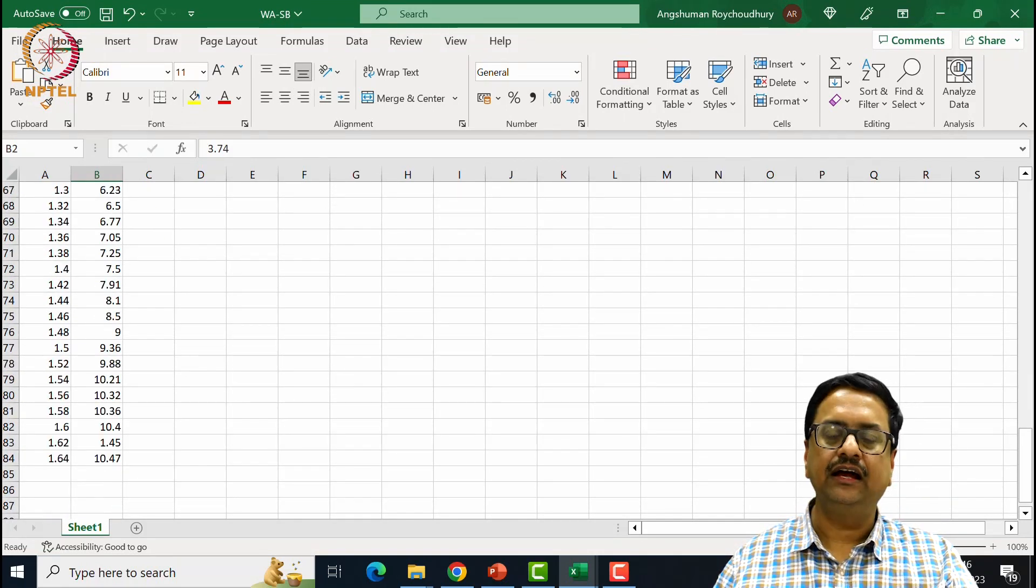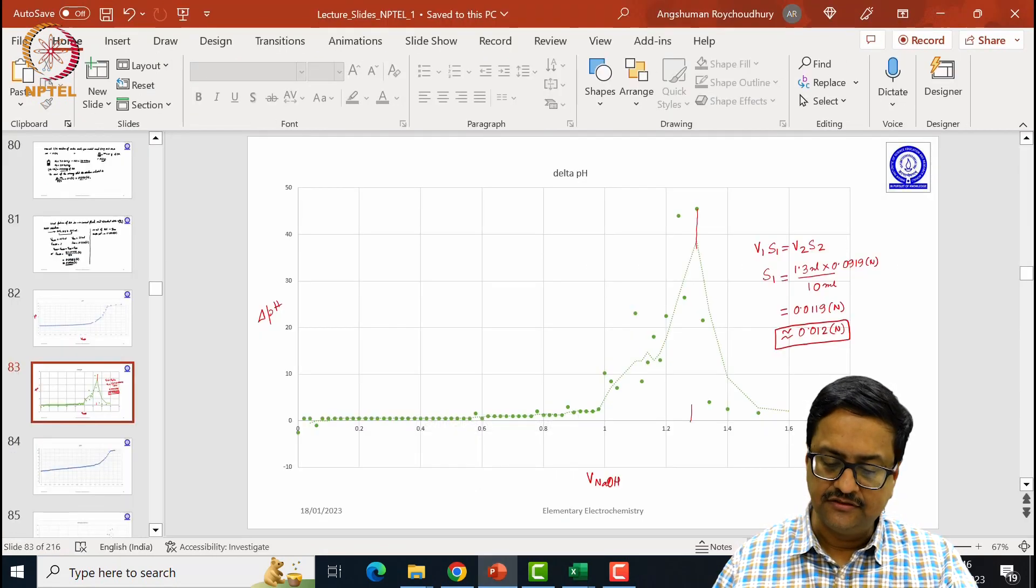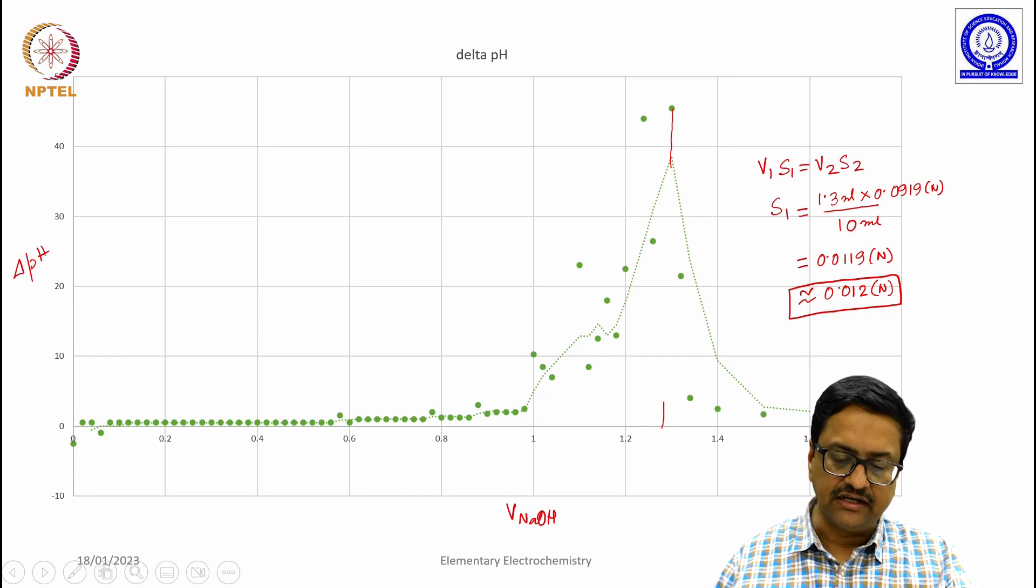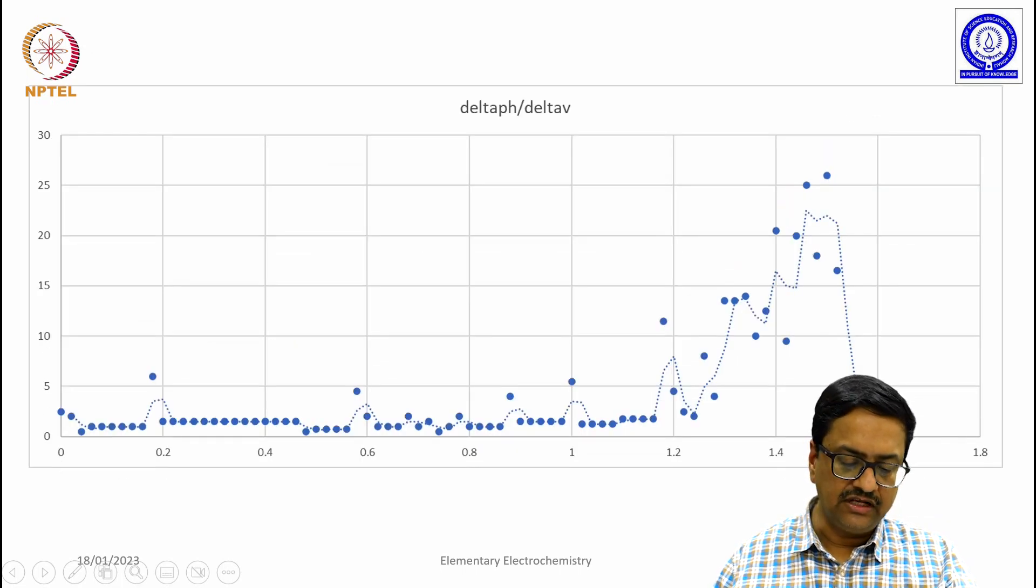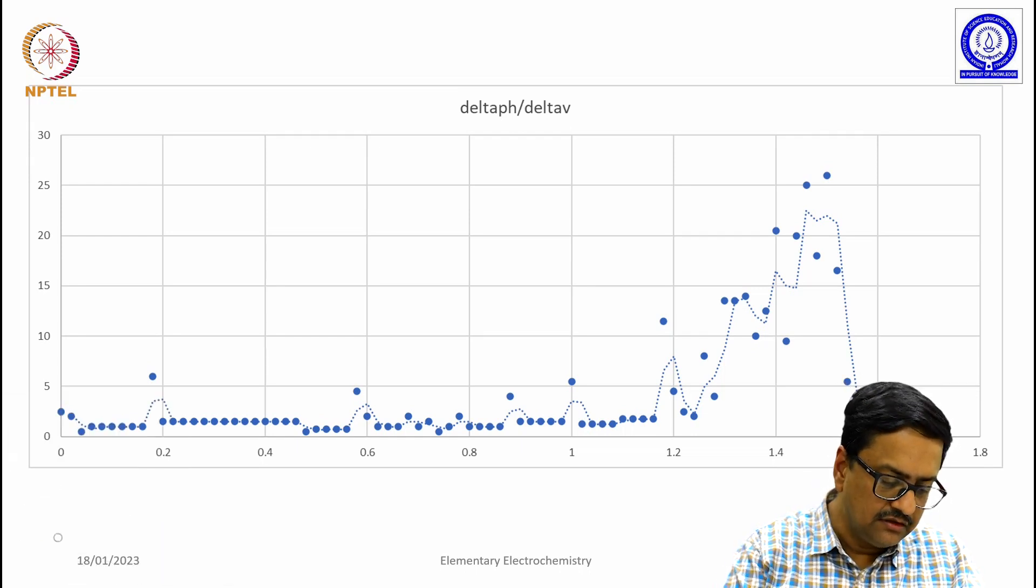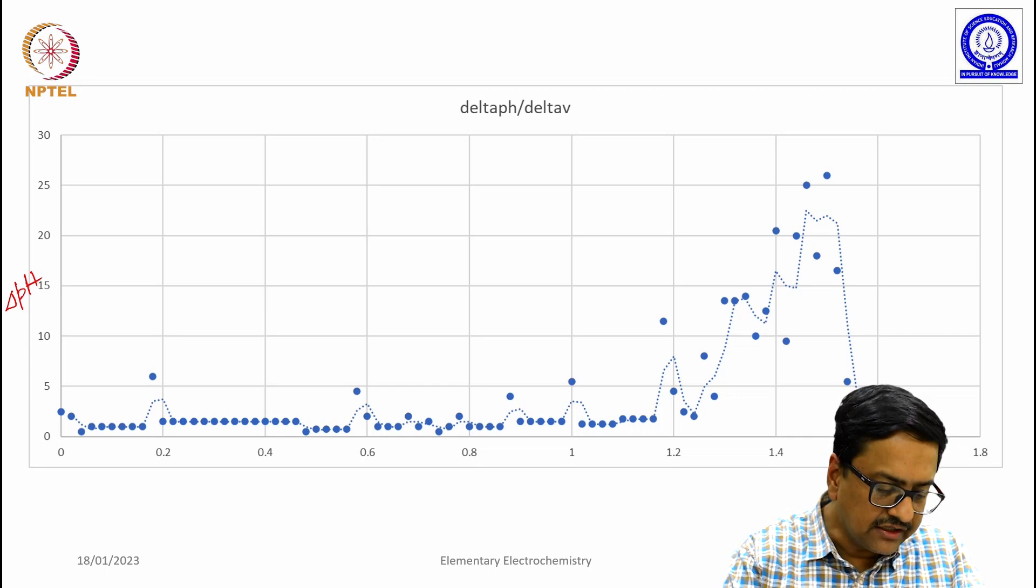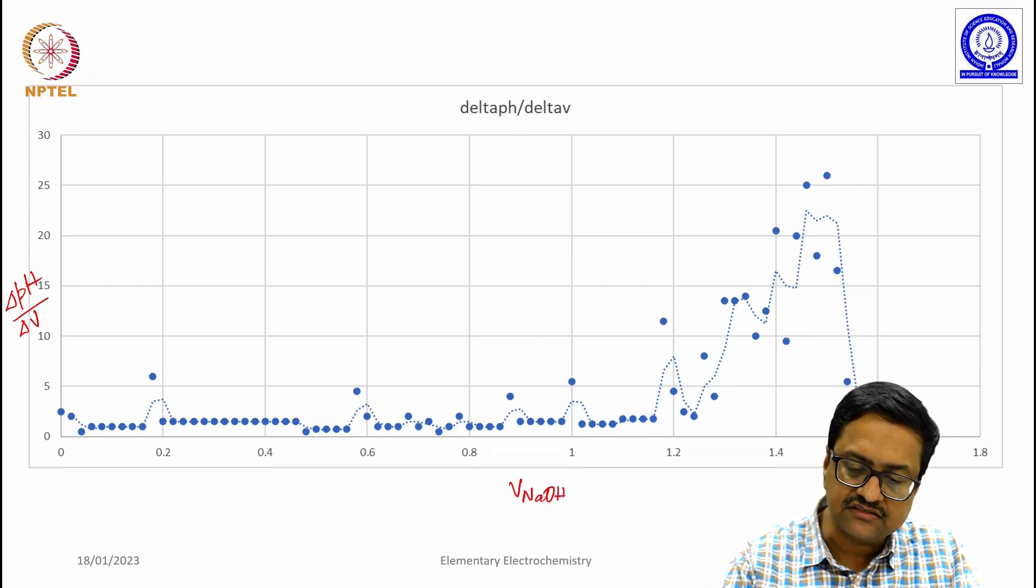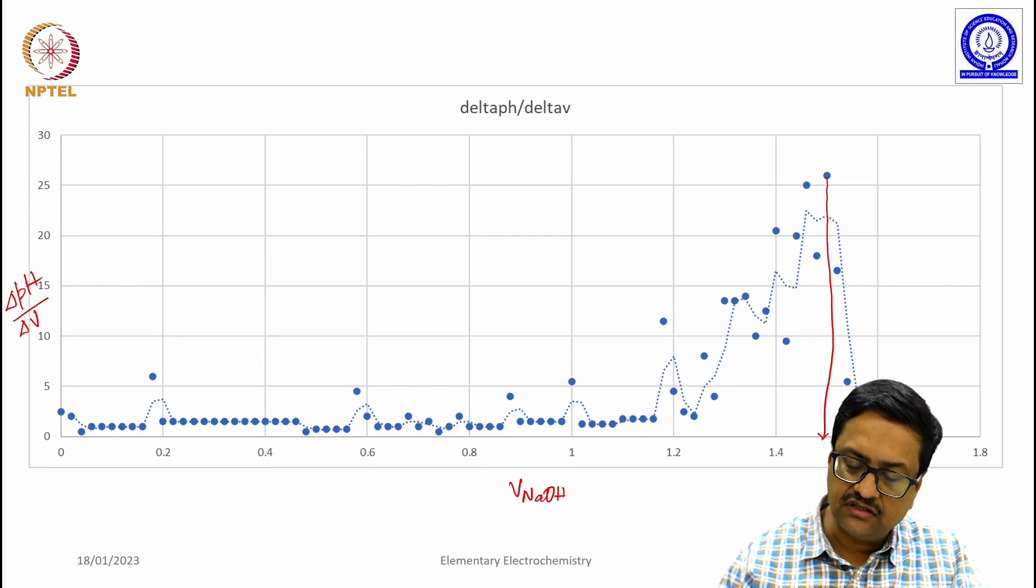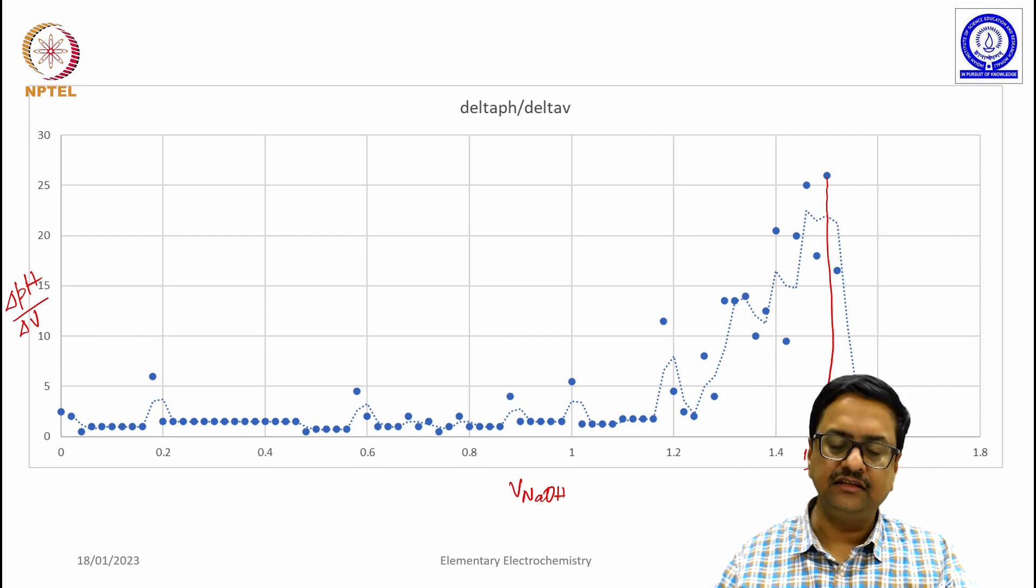And for this again, I have done the similar calculation that I have described for the strong acid strong base case. And when I plotted those data, the corresponding delta pH, I think this plot is delta pH by delta V versus V NaOH. We see that the value reaches maximum at this point, which turns out to be about 1.5 ml. If you go back and look at the table and do the calculation, you will see that it comes at 1.5 ml.